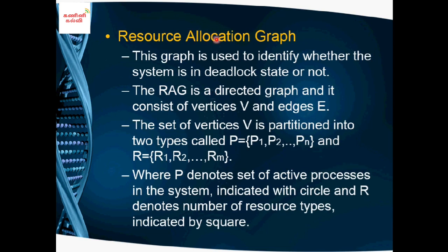These are the necessary conditions for deadlock — all four must hold for a system to be in deadlock. The second important topic related to deadlock is the Resource Allocation Graph (RAG). This graph is mainly used to identify whether the system is in a deadlock state or not.